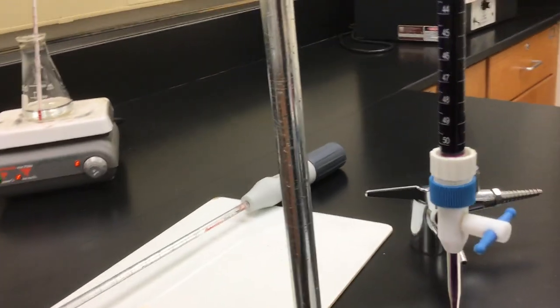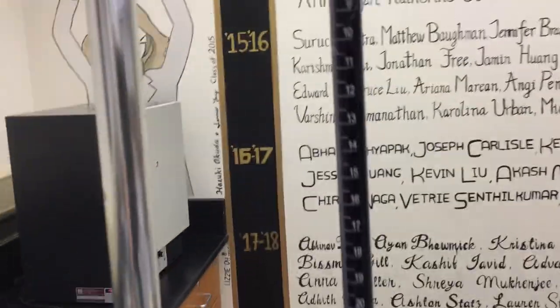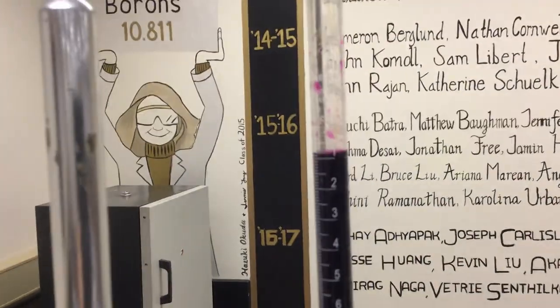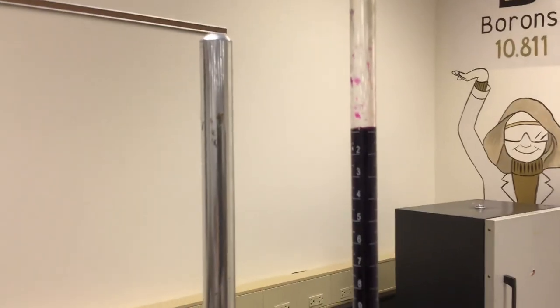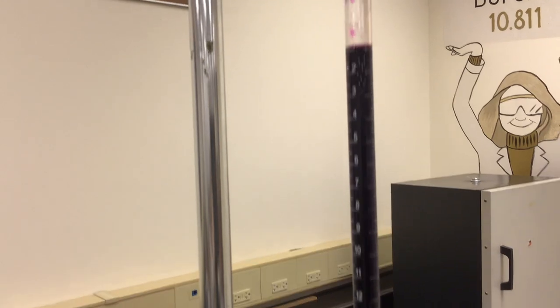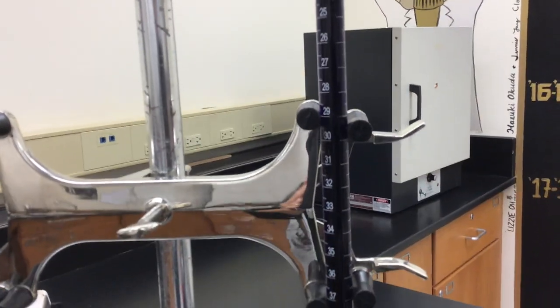And then keep in mind that the markings on the burette, the 50 is at the bottom and the zero is all the way at the top, which is a little strange for most people. They wonder why isn't zero at the bottom and 50 at the top.